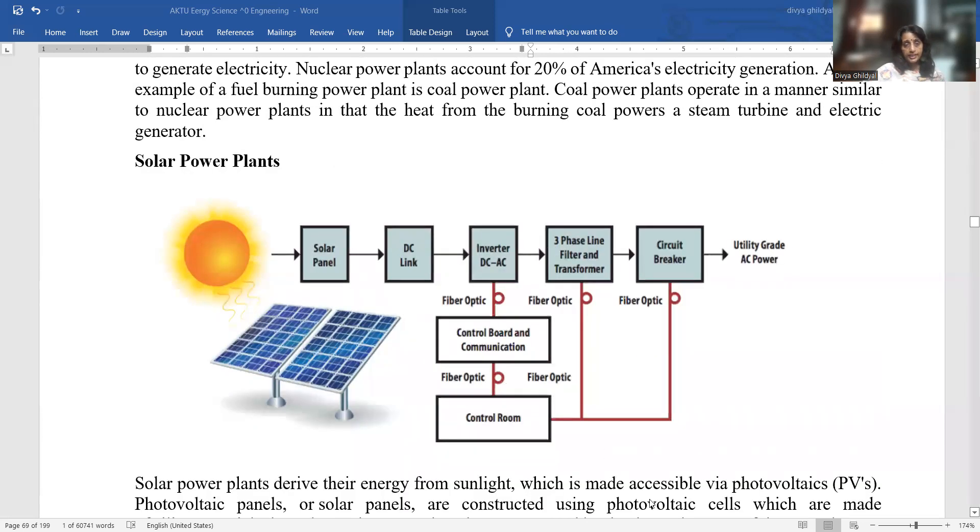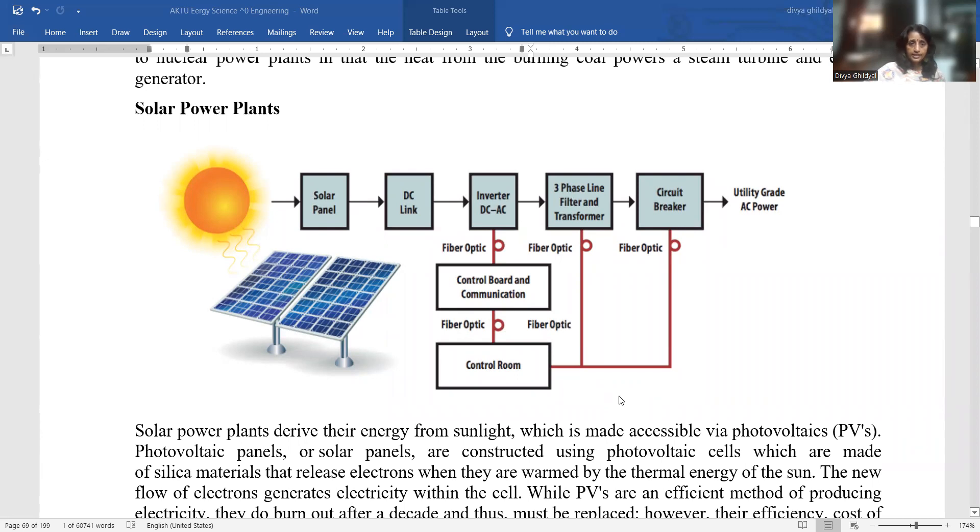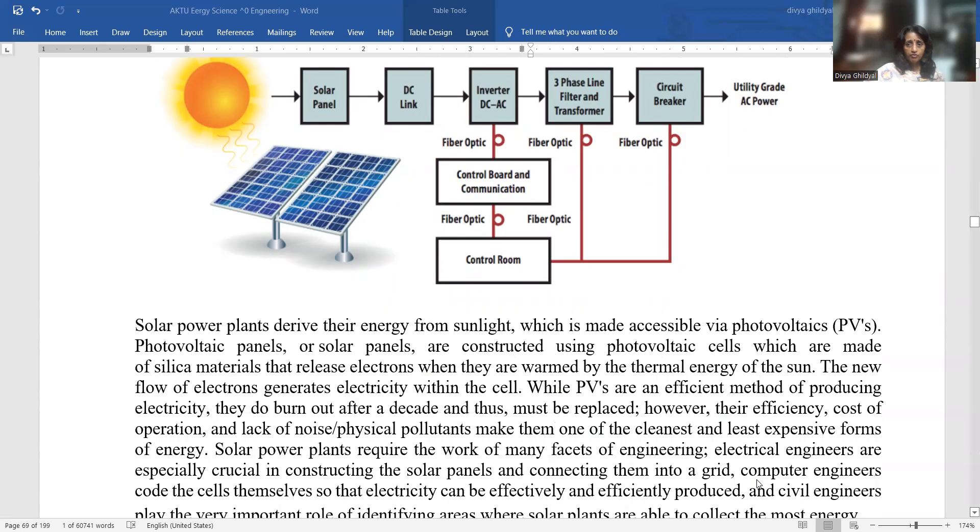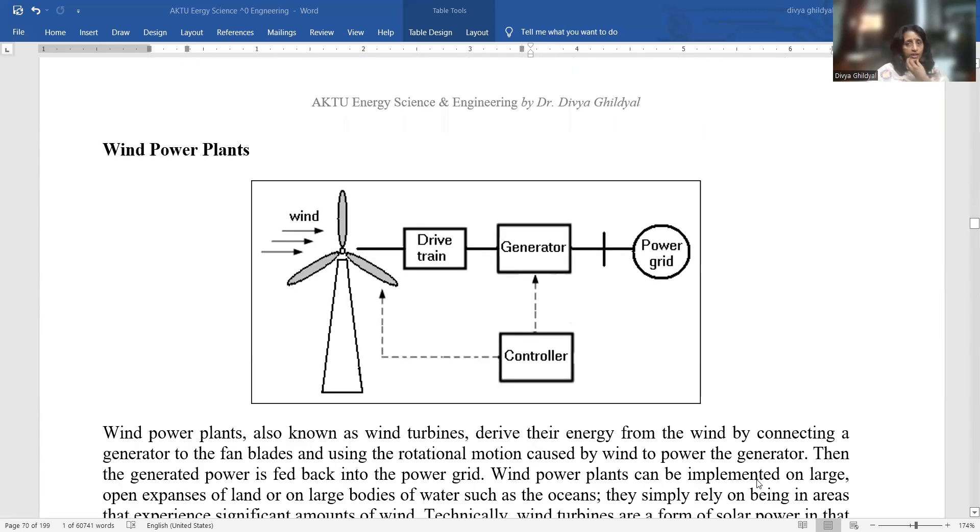Solar power plants are taking energy from sunlight which is made accessible via photovoltaic cells or solar panels. Photovoltaic cells are made of silica materials that release electrons when they are exposed to thermal energy of the sun. The new flow of electrons generates electricity within the cells. While photovoltaics are an efficient method of producing electricity, they do burn out after a decade and must be replaced. However, their efficiency, cost of operation, and lack of noise make them one of the cleanest and least expensive forms of energy. All these headings you will be studying more in detail in your unit 3, 4, and 5, this is just an introduction.